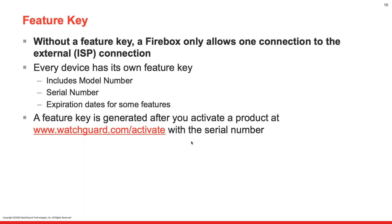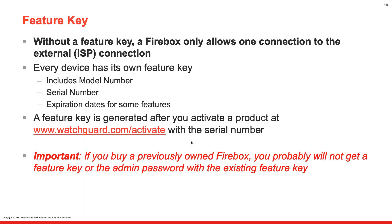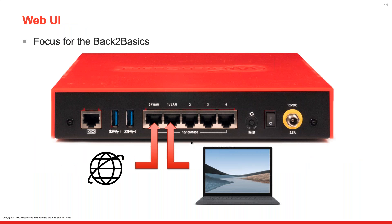If you buy a box second-hand from Craigslist or eBay, you run the risk of not having a valid feature key and therefore not being able to run multiple devices. However, if a feature key is expired, it will still work — we'll cover that more in depth. Each device has its own feature key, which includes model number, serial number, and expiration dates for features. The feature key is generated after you activate a product at www.watchguard.com/activate using the serial number. You can also enable automatic feature key synchronization so renewals are applied automatically.